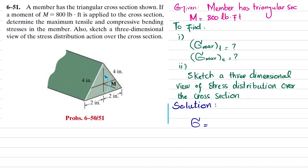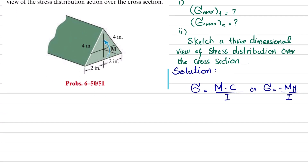As we know, the maximum bending stress is equal to M times c divided by I. We can also write it as: bending stress at any location from the neutral axis equals minus M times y divided by I. We will find the sectional property I for this beam.